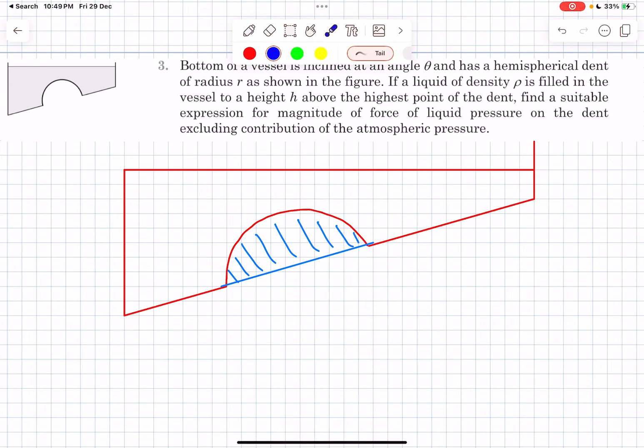What we can do instead is assume that this dent did not exist and there was fluid present here as well. Why are we doing this? The presence or absence of fluid at this part will make no difference to the force that the fluid exerts on the hemisphere, because the pressure that acts on this hemispherical surface is only dependent on the height from the free surface.